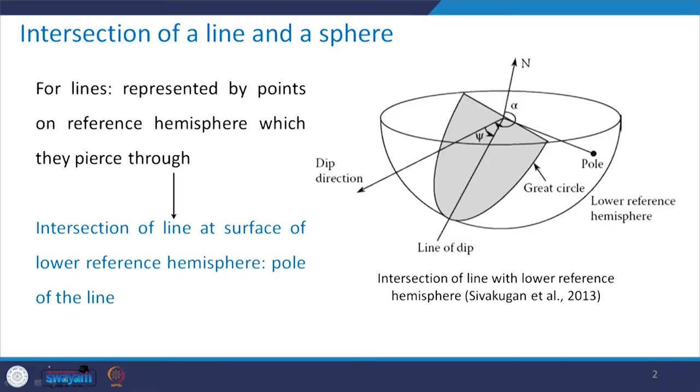followed by the discussion on equal area projection. Then we will see how to represent a plane with the help of a great circle and a pole on the stereonet. Let us start with our discussion on the intersection of a line and a sphere.